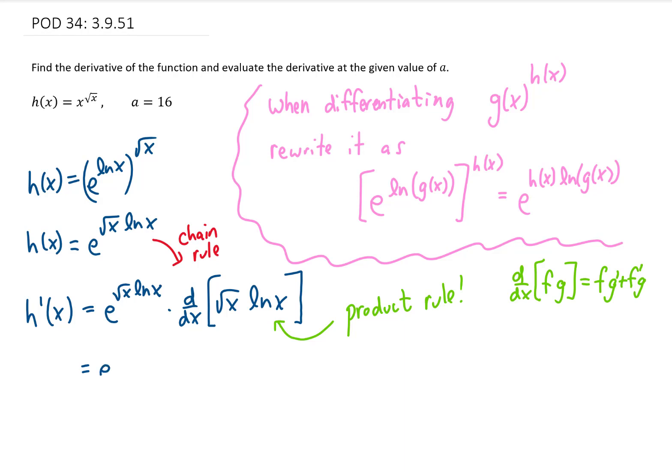So I'll copy down this exponential term. And now the product rule says that we're going to copy this first term down and take the derivative of the second term. We're going to add that, we're going to take the derivative of the first term and multiply that by the second term.